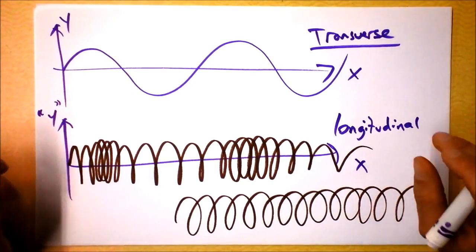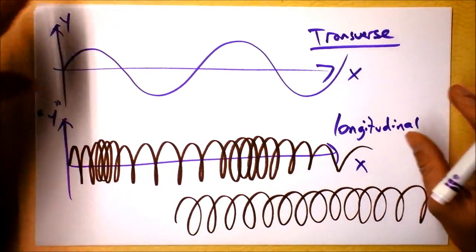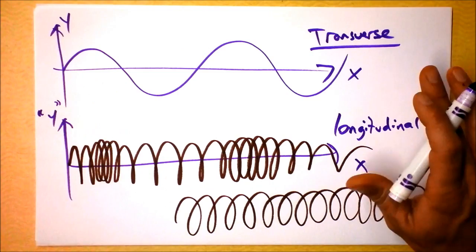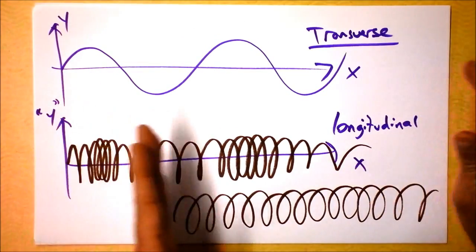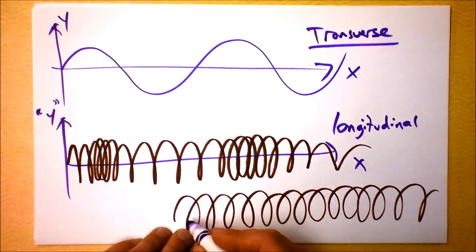But another way we have a longitudinal wave is a sound wave. And so, if I beat a drum, for instance, or hit a table, boom, I cause the surface of the table to move forward and then back. And it hits the medium.